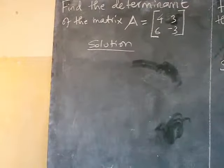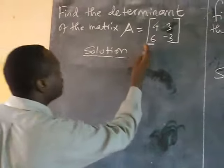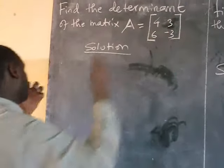We are required to find the determinant of the matrix A. So our matrix A, we have 4, 6, 3, negative 3.